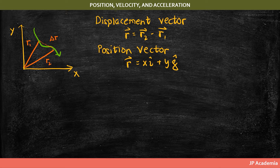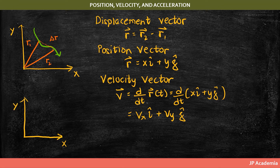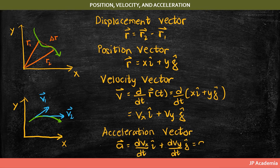First, we have the position vector r, where the r vector equals x i-hat plus y j-hat. Then we have the velocity vector, which is the first time derivative of your position vector, and it has components along the x and y axis. Note that the velocity vector is directed tangent to the path of the particle. We also have the acceleration vector, which is the time derivative of the velocity vector, or the second time derivative of the position vector.